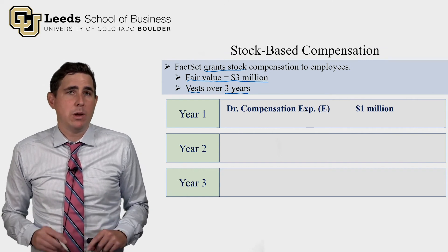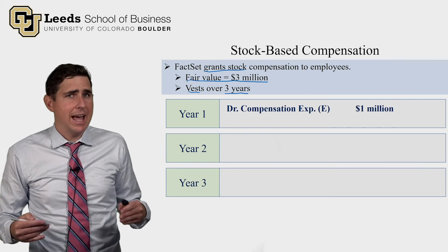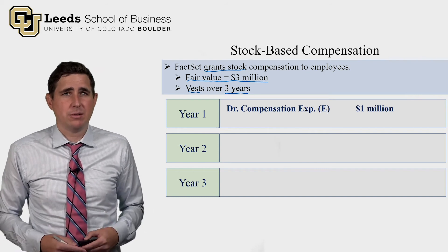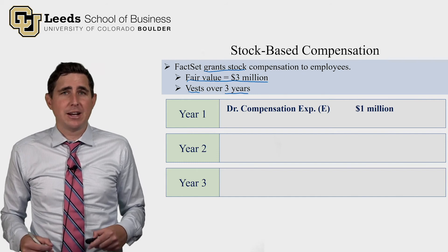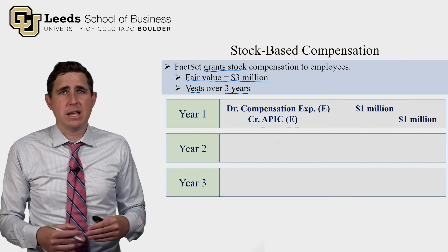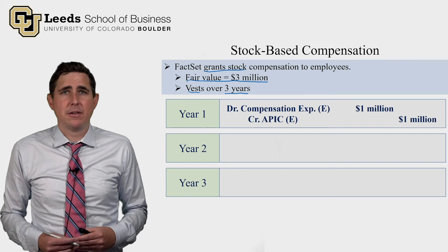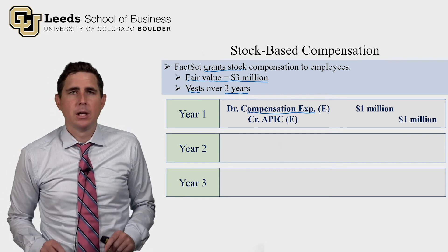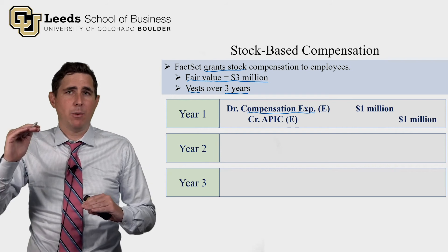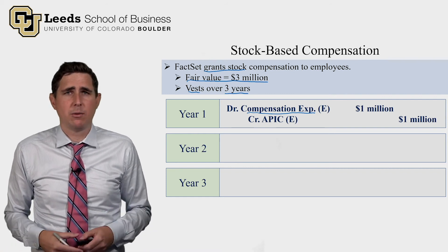The journal entry each year is a debit to compensation expense of $1 million. Since employees aren't being paid in cash and no liability is owed, the credit goes to the APIC account — equity's version of a slush fund. Compensation expense is closed into retained earnings, reducing it by $1 million, while APIC goes up by $1 million, so the net effect on total equity in year one is zero.